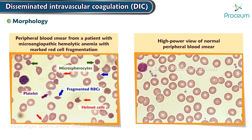The large platelet in the center suggests that the thrombocytopenia is due to enhanced destruction. Here is a high-power view of a normal peripheral blood smear showing several platelets with a normal lymphocyte. The red cells are of relatively uniform size and shape, with the diameter of the normal red cell approximating that of the nucleus of a small lymphocyte. The central pallor should be equal to one-third of its diameter.